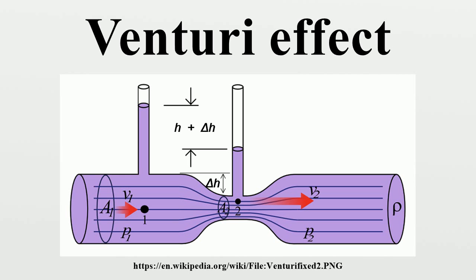The simplest apparatus, as shown in the photograph and diagram, is a tubular setup known as a Venturi tube or simply a Venturi. Fluid flows through a length of pipe of varying diameter. To avoid undue drag, a Venturi tube typically has an entry cone of 30 degrees and an exit cone of 5 degrees.